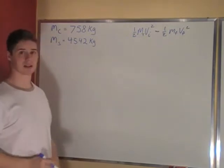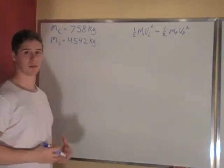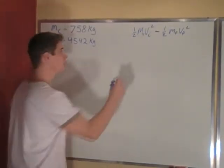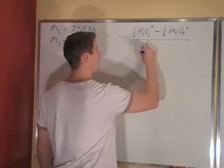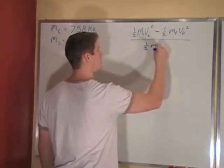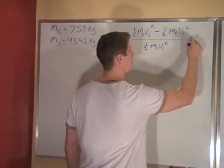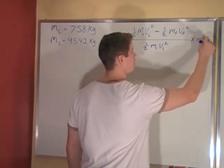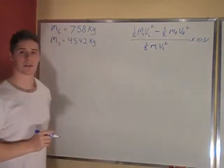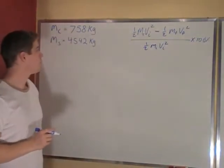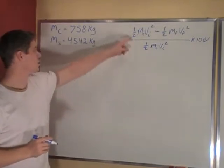Now since we want percent lost, it's just the amount lost divided by what we started with. What we started with is ½ initial mass and initial velocity squared. And that's times 100% to make it a percentage. So to start off, we can actually cancel the one-halves.